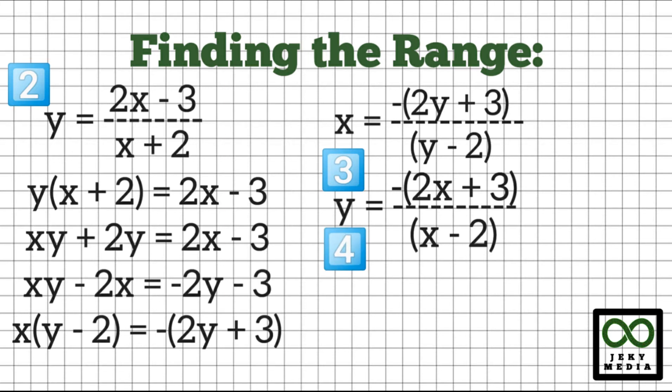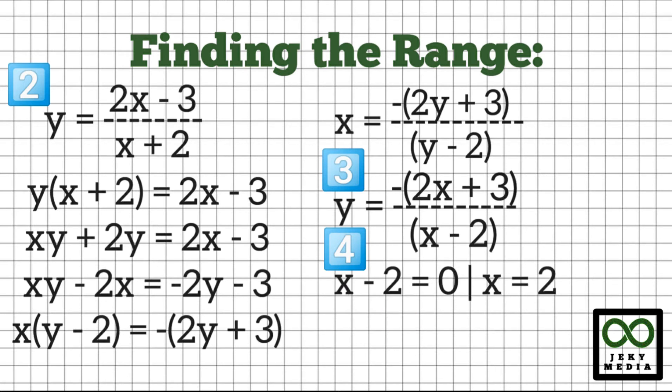Step 4: Focus on the denominator x minus 2. Equate this to 0. x minus 2 is equal to 0. Transposing negative 2 to the right, this will become x is equal to positive 2. This means that the range are all real numbers except positive 2.